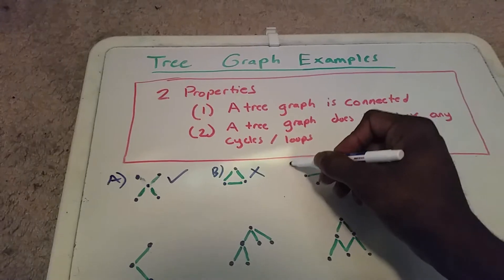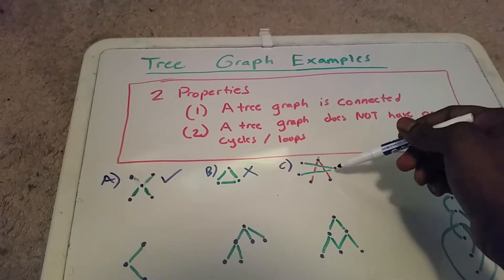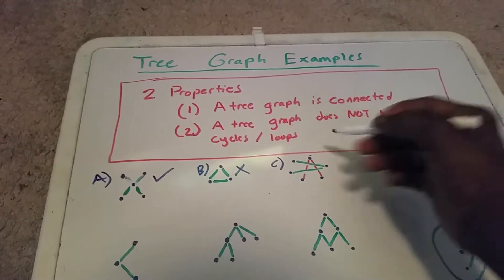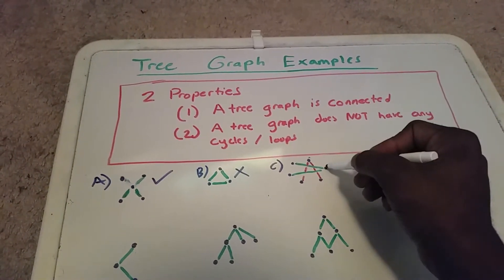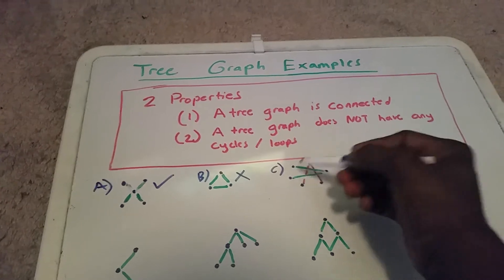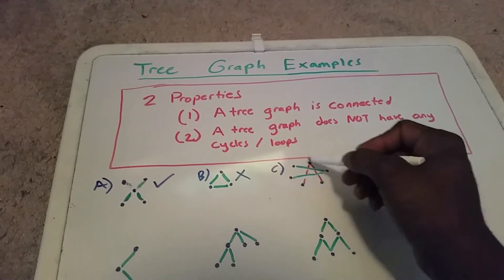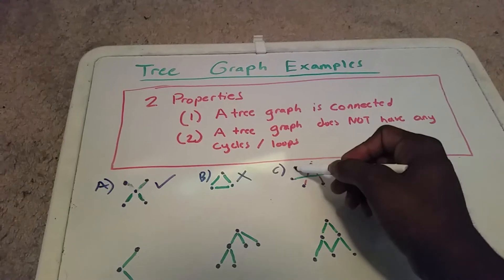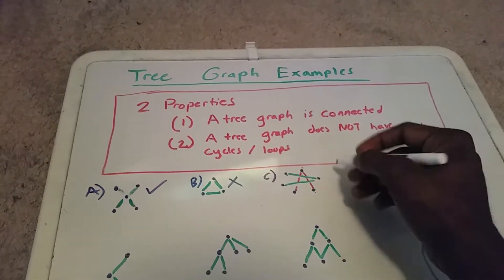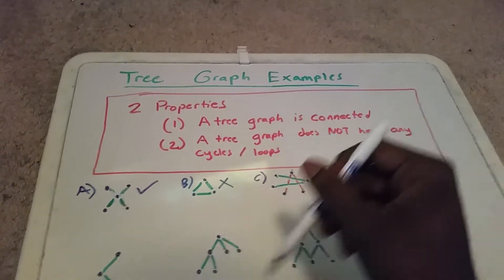Here we can see that this is not connected. It does not satisfy property number one, because I cannot get from this node here to any of these three, and I cannot get from this node to any of these three, and vice versa. So this is not a tree graph.